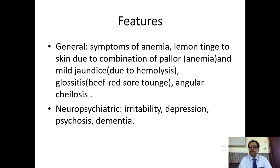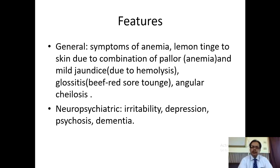The patient may also have cracking of the corners of the mouth, called angular cheilosis. It is also found in iron deficiency anemia but can occur in vitamin B12 deficiency as well. The patient may have neuropsychiatric features like irritability, depression, psychosis and dementia. Though dementia is an old-age disease, if a younger patient presents with dementia and is anemic, think of vitamin B12 deficiency — simply order a serum B12 level to confirm.